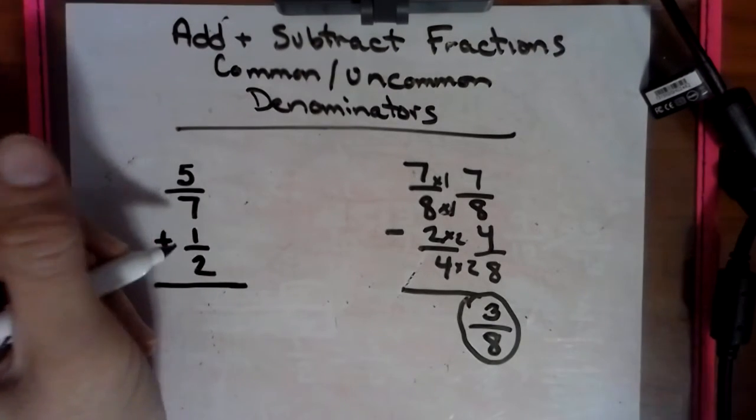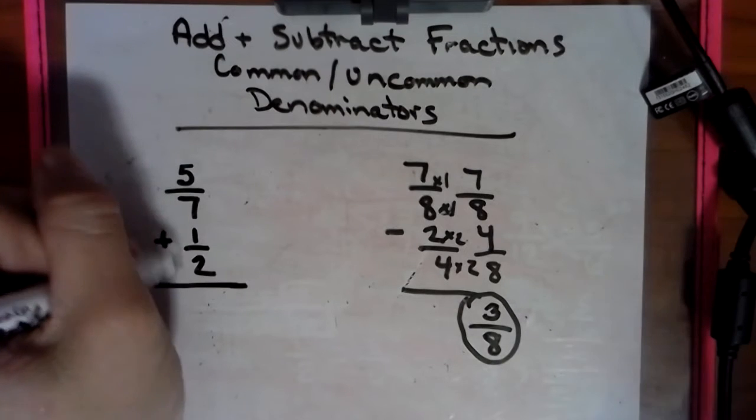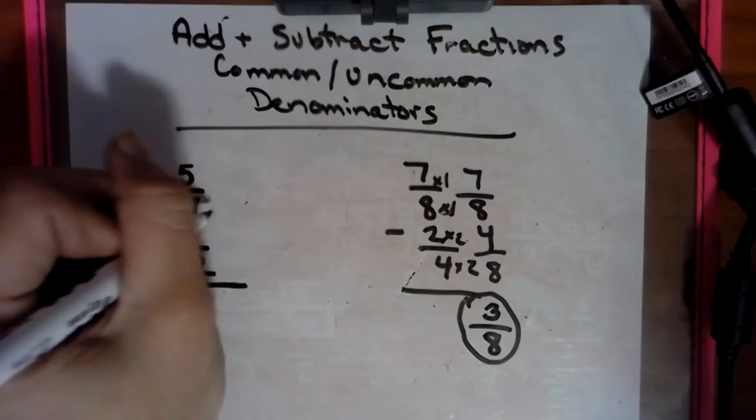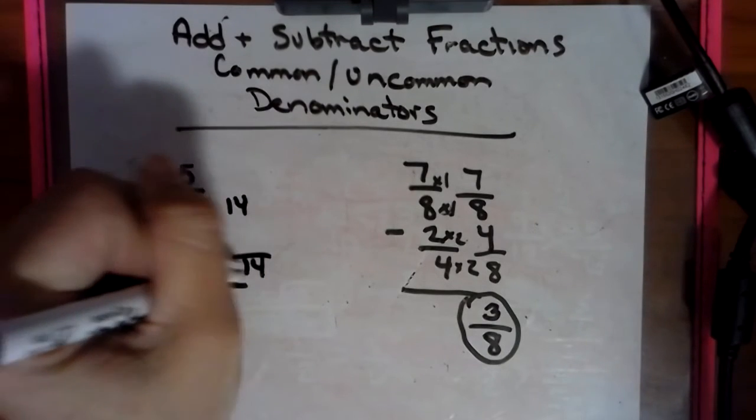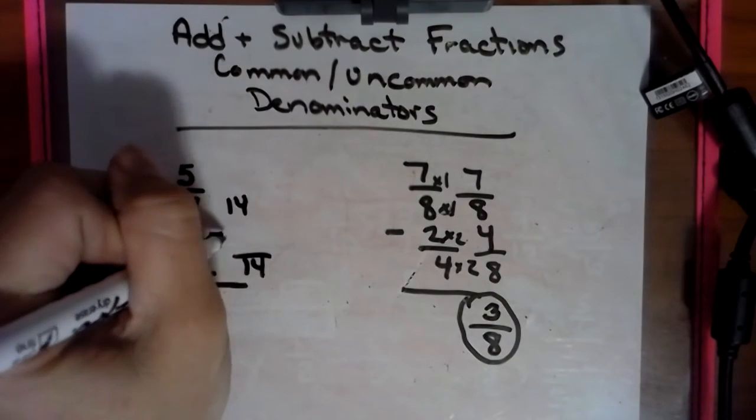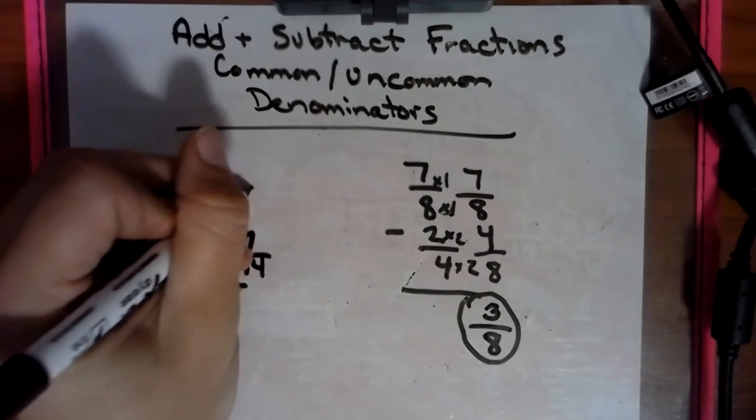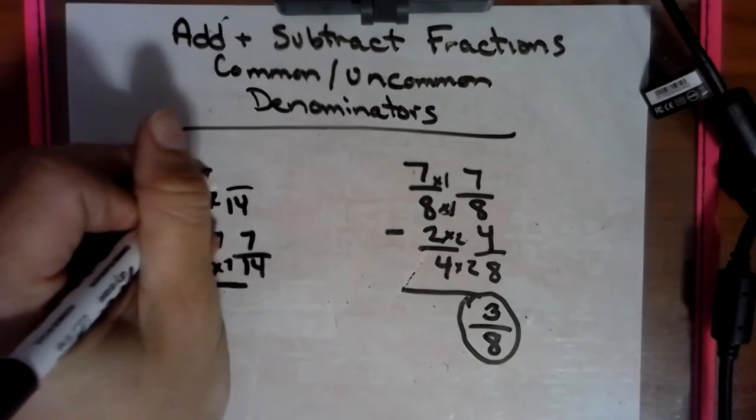So let's say we have 5 sevenths plus 1 half. So I look at those two denominators, and I say, well, I can't count by 2s to land on 7. So I maybe can multiply the two together. So we're going to get 14. 2 goes to 14 by 7. Do it to its top. 7 goes to 14 by 2. Do it to its top.